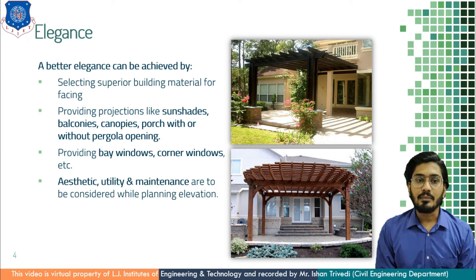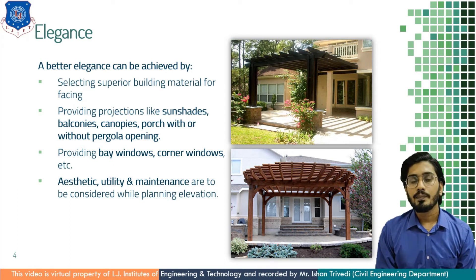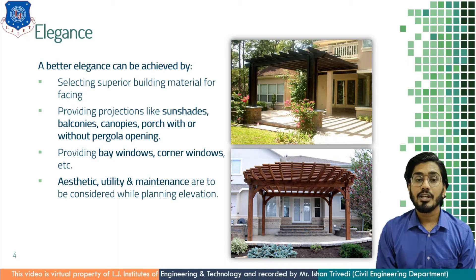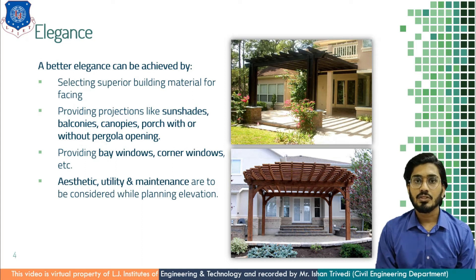Elegance can be achieved by providing bay windows, corner windows, and so on. This phenomenon has also been taught in prospect — by providing a kink in the wall to accommodate a window and cupboard instead of a straight wall. So aesthetic, utility, and maintenance are to be considered while planning and elevation. This is how the elegance or beautification of a building can be done.